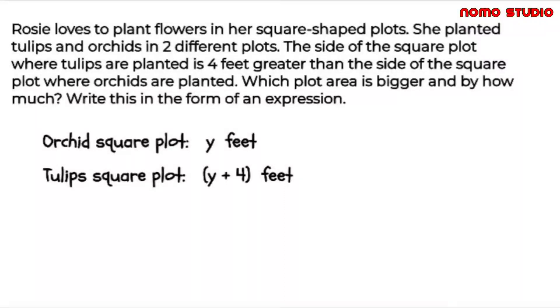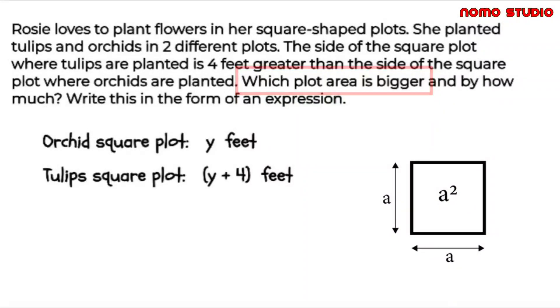Since we are looking for the plot area that is bigger than the other plot, let's recall that the formula for an area of square is to square the length of its side. We only square one side length since square has 4 equal side lengths.